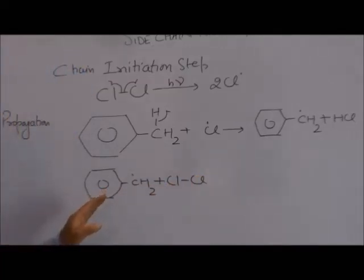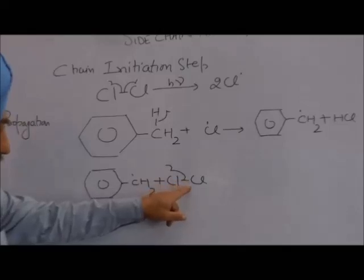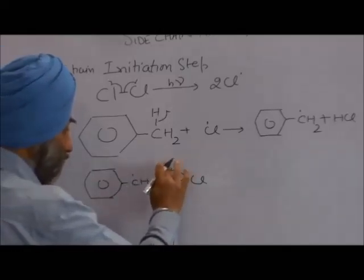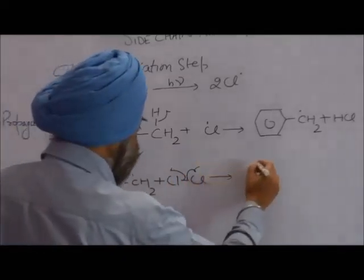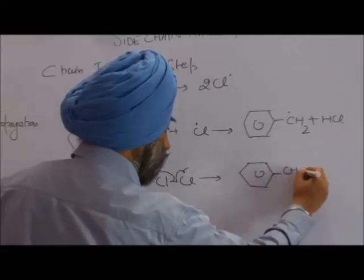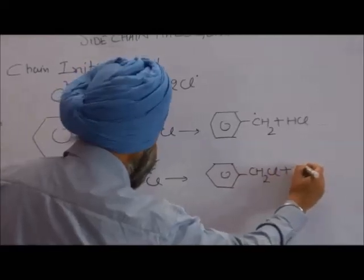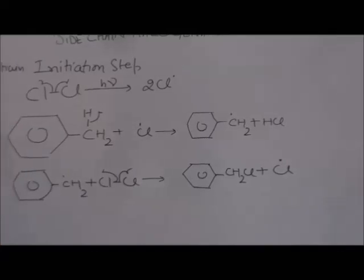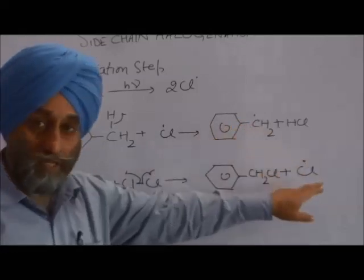This benzyl free radical will then attack another chlorine molecule. The chlorine molecule will break into chlorine free radicals, producing benzyl chloride. In both chain propagation steps, one of the products is a free radical.